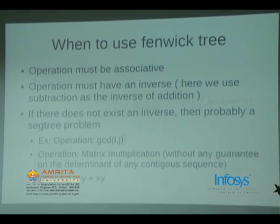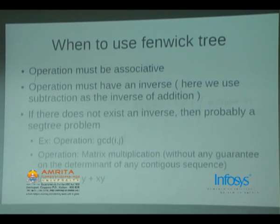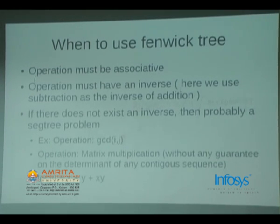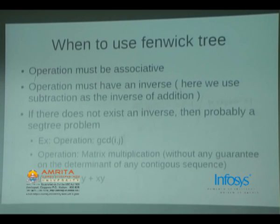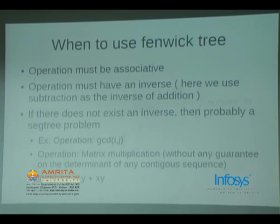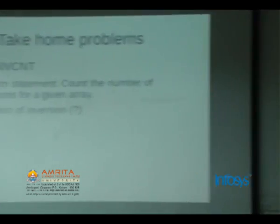The same applies to matrix multiplication — unless all sub-sequence matrices are non-degenerate (determinant non-zero), you will not be able to use Fenwick tree for product of matrices. Some cases can be used because a-inverse requires determinant of A to be non-zero. Another operation: f(x,y) = x + y + xy — for such operations please use a segment tree. Try to think about how to do GCD query: support both change a[i] to a new number, and GCD between i and j, both in O(log n) using segment tree.